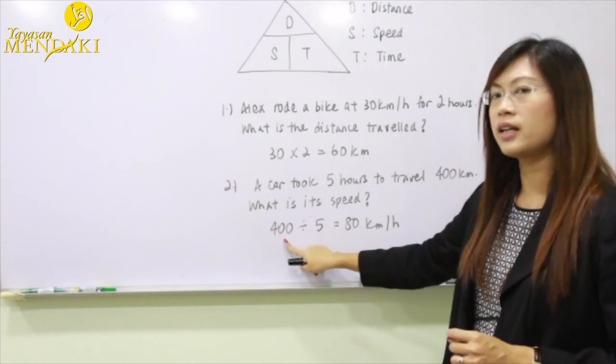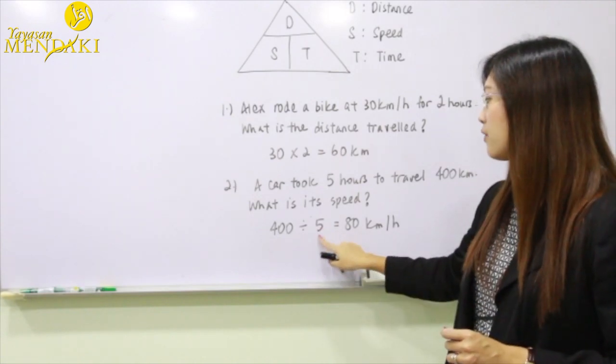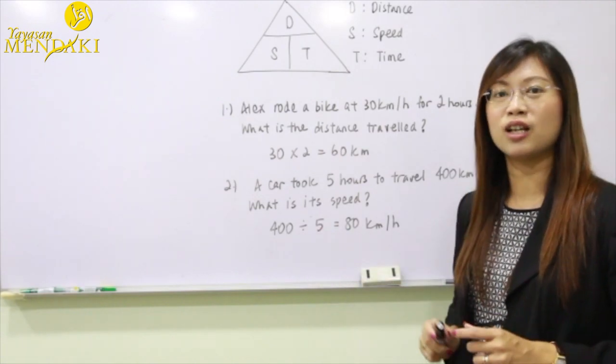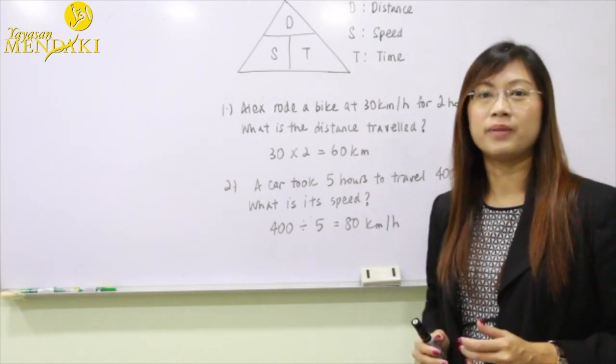we're going to take 400 divided by the time, which is five hours. So 400 divided by 5, that will get you to 80 km per hour. Therefore, the car's speed is 80 km per hour.